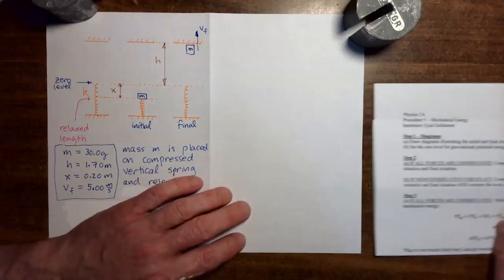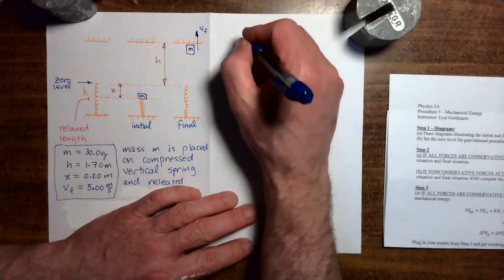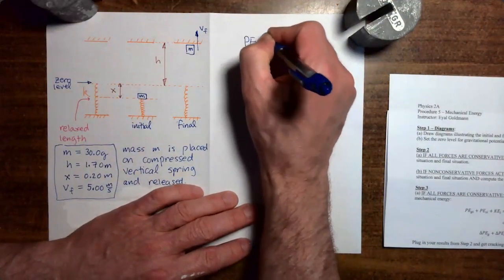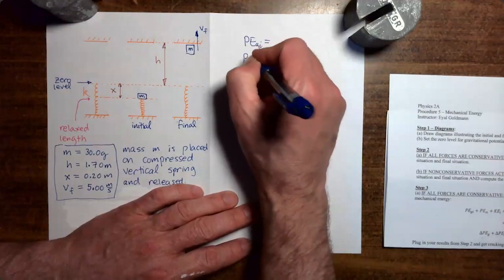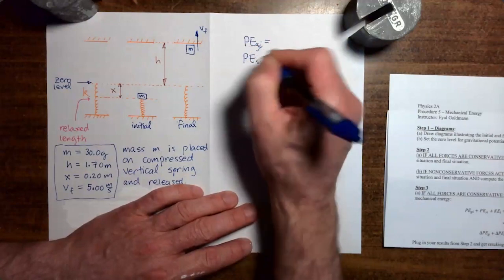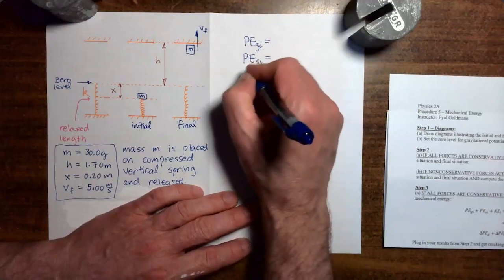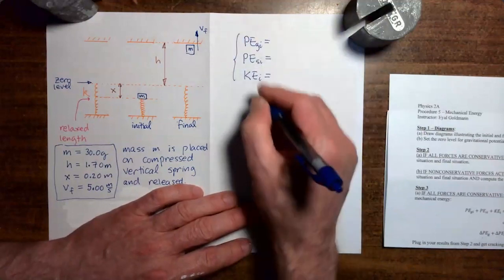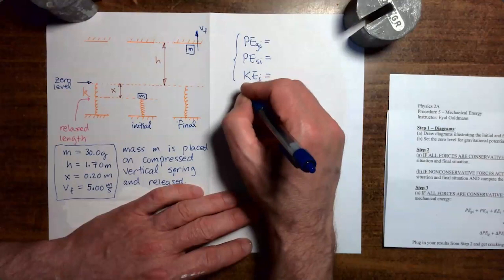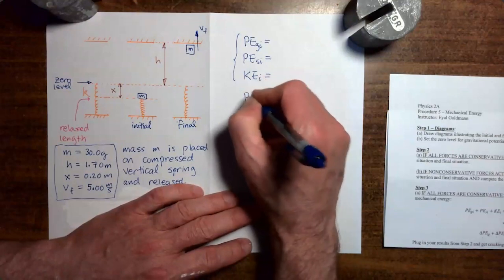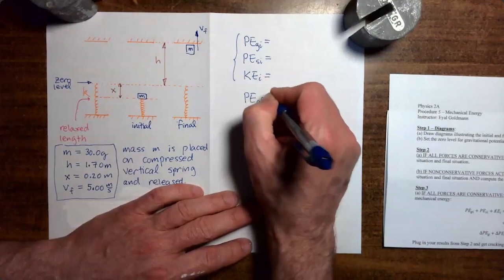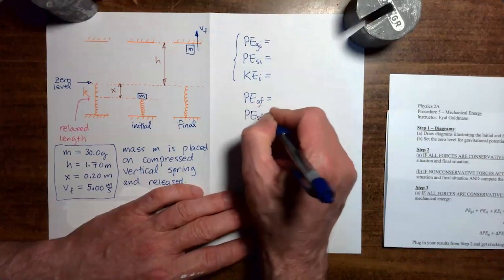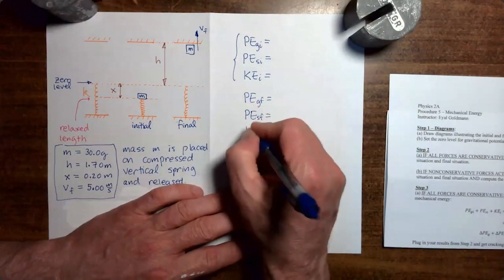I'm going to write out all the things we need to work out. For the initial situation: gravitational potential energy initial, spring potential energy initial, and kinetic energy initial. And then all of those for the final situation as well: gravitational potential energy final, spring potential energy final, and kinetic energy final.